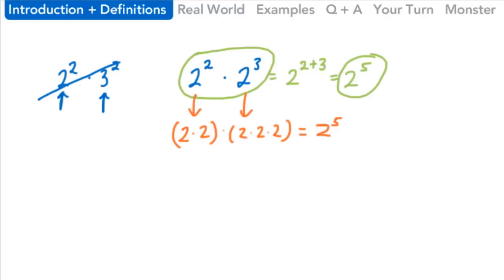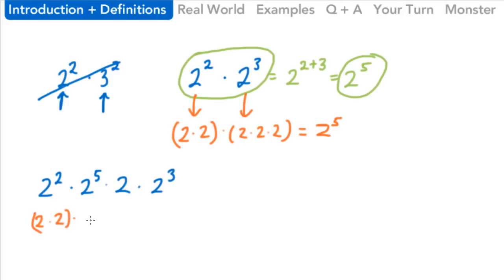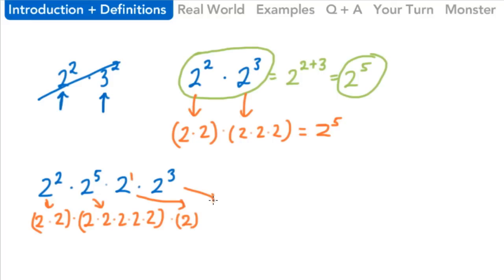Let's try it again, but this time with numbers that are a little more complicated. Let's do 2 squared times 2 to the 5th times 2 times 2 to the 3rd. If we were to write this whole thing out, our work would be pretty long. We've got 2 times 2 — which is 2 squared — times 2 times 2 times 2 times 2 times 2, which is our 2 to the 5th. Then we've got to multiply by a single 2 on its own, so that 2 is actually 2 to the 1st power.